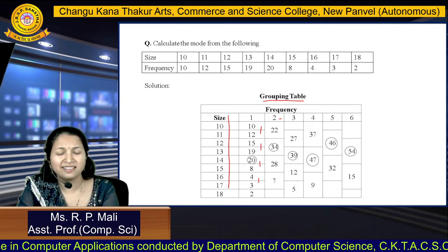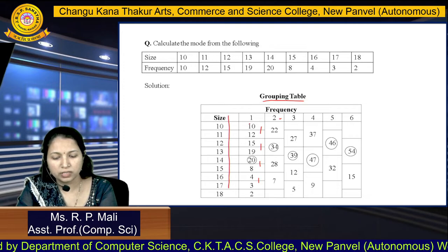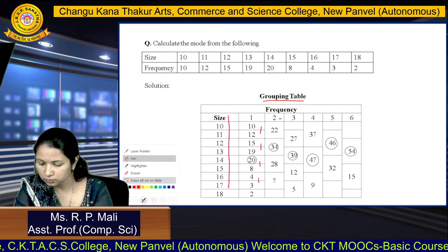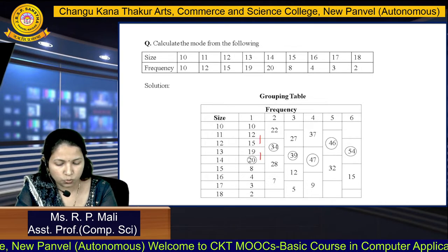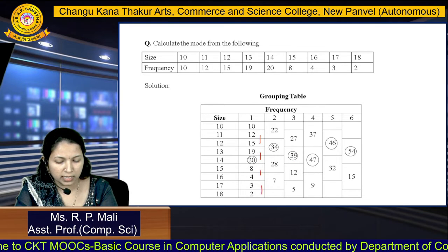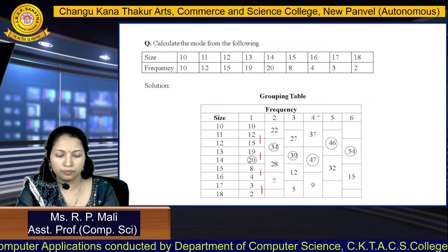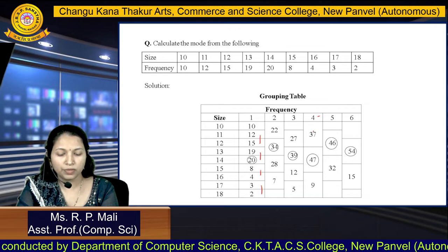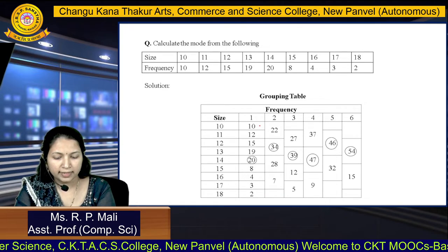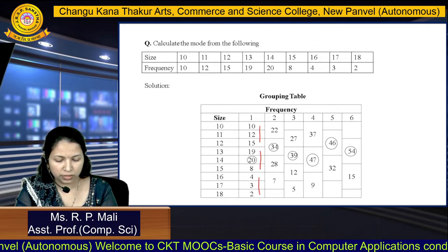For the third column, skip the first frequency (10) and add the next two frequencies: 12 plus 15 equals 27; 19 plus 20 equals 39; 8 plus 4 equals 12; 3 plus 2 equals 5. For the fourth column, add frequencies in 3's: 10 plus 12 plus 15 equals 37; 19 plus 20 plus 8 equals 47; 4 plus 3 plus 2 equals 9.